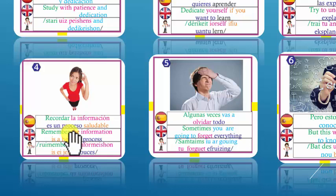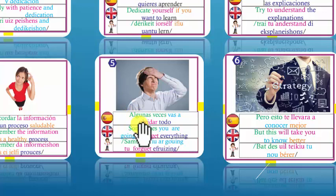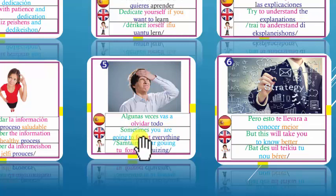Number 4: Remember the information is a healthy process. Recordar la información es un proceso saludable. The cat — what is she doing? She is remembering. Number 5: Sometimes you are going to forget everything. Algunas veces vas a olvidarlo todo. Si eso pasa cuando estás aprendiendo.